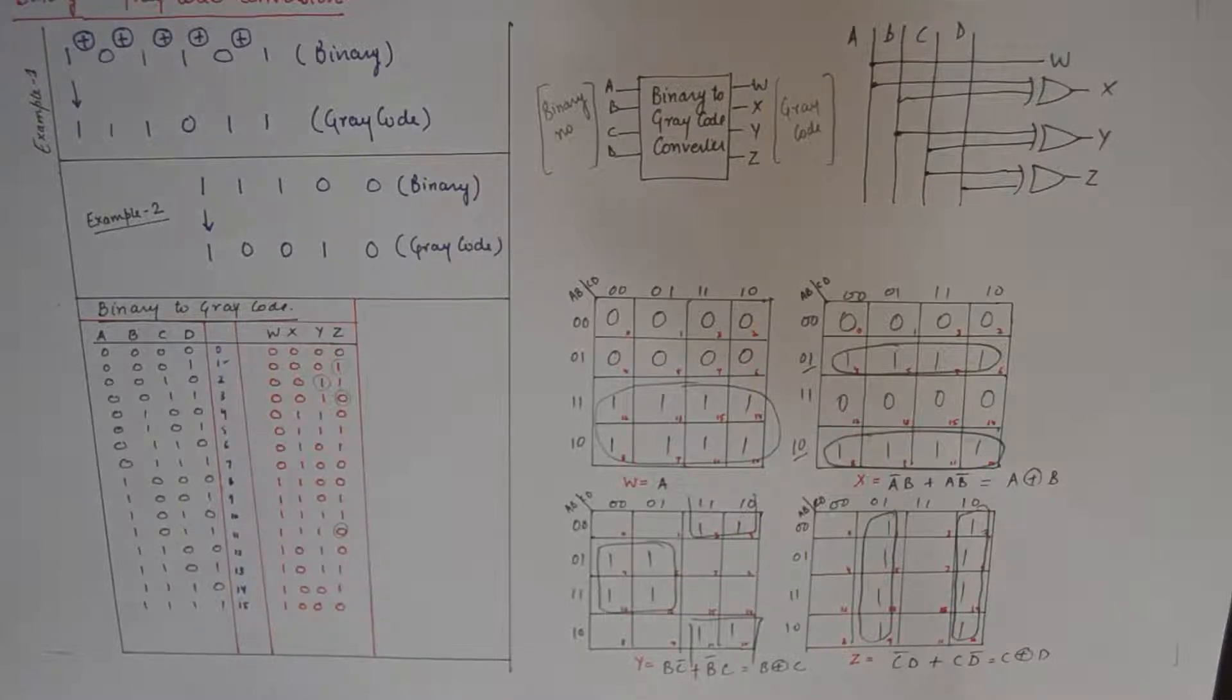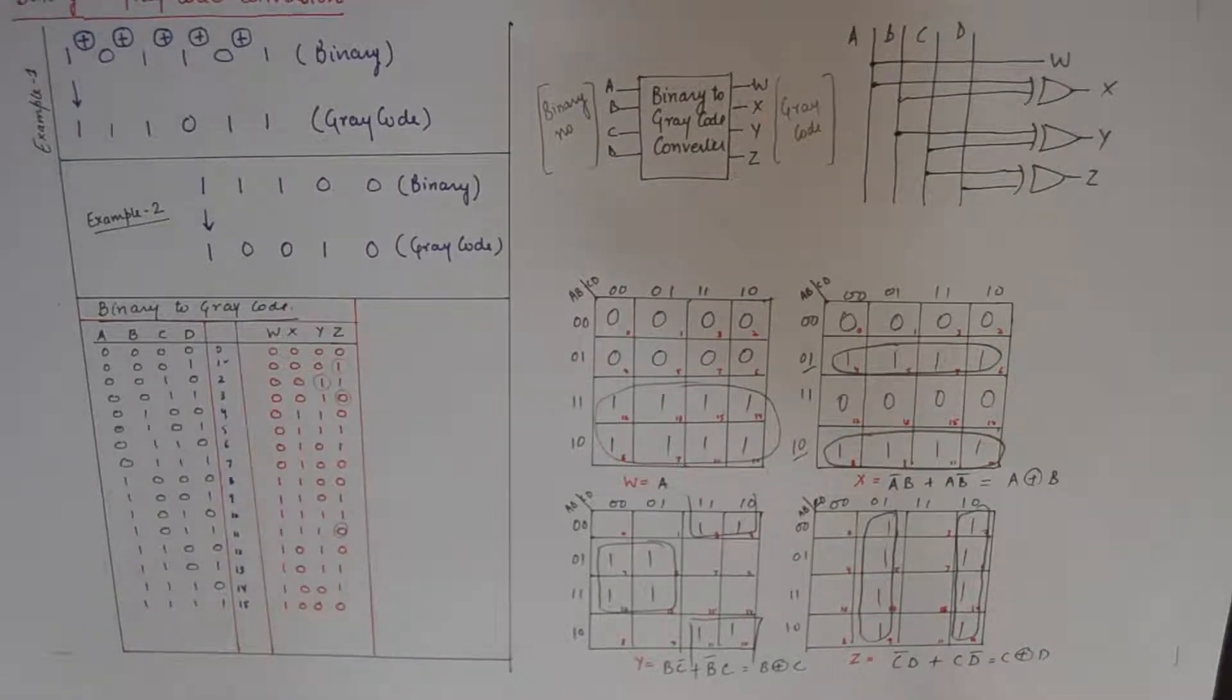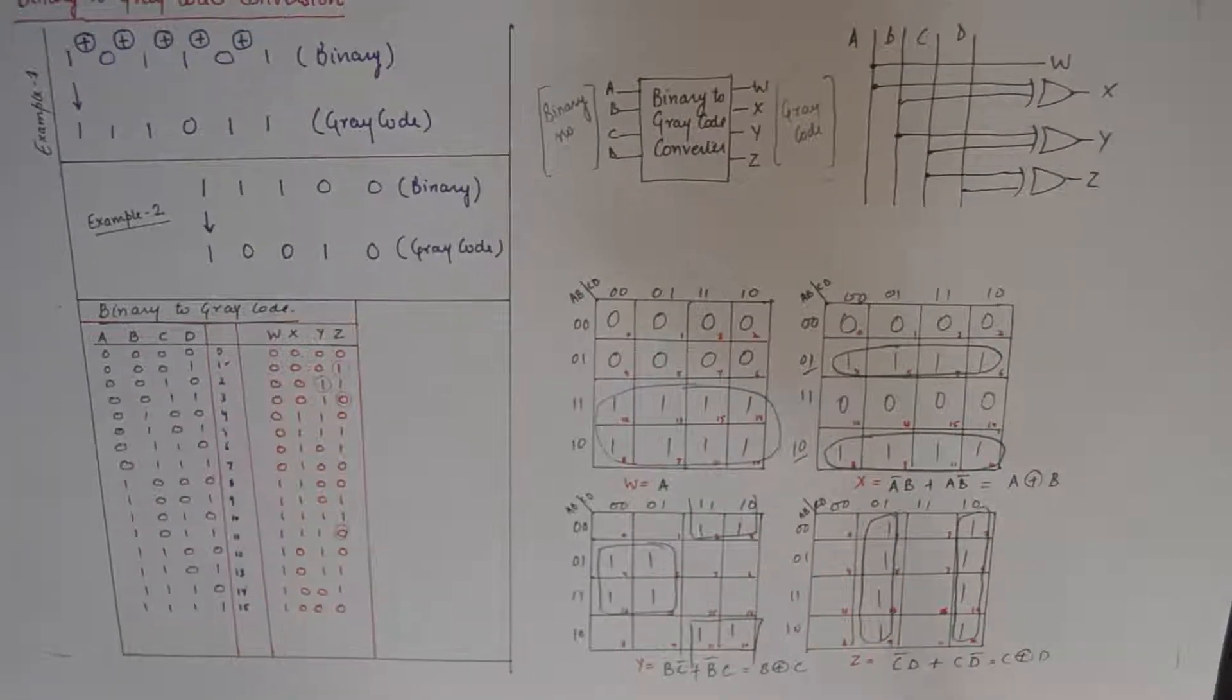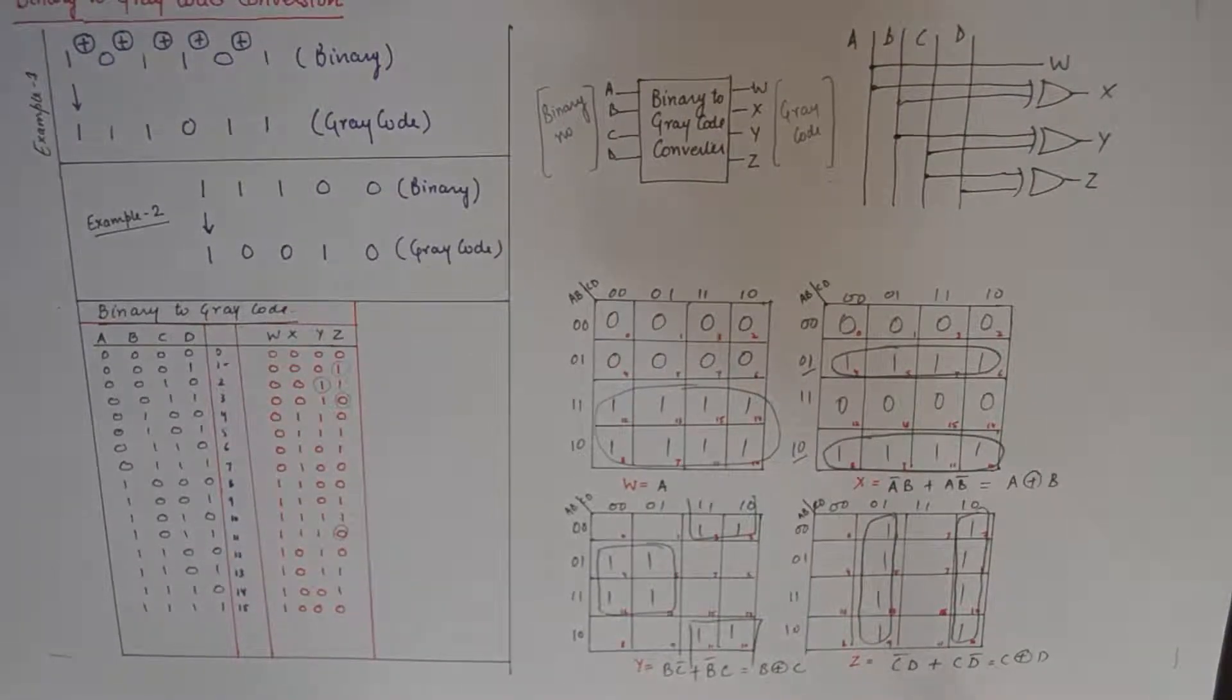Once you know the process of converting a binary number to gray code, you can simply fill up the truth table. It could be a three-bit binary to gray code converter or a four-bit binary to gray code converter. Once you have the truth table ready, you need to put the values in the k-maps to find the output in terms of input, and that is all I wanted to discuss in this topic. I hope it was of help, and if you liked the content of this video and other videos in the series, give it a thumbs up, consider sharing. I'll see you in the next one, take care, goodbye.